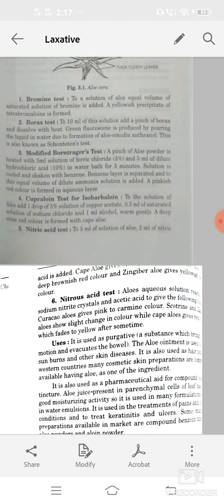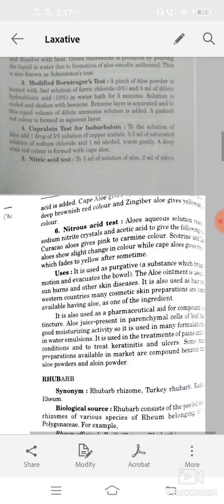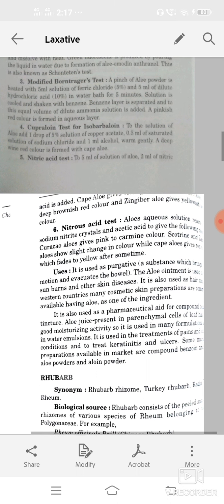Equal volume of dilute solution of ammonia is added and pink red color is formed. Uses: used as a purgative which evacuates the bowels. Aloe ointment also to cure sunburns or other skin diseases. As a hair tonic, very helpful for the growth of hairs or for skin.